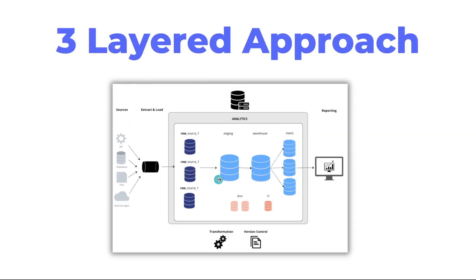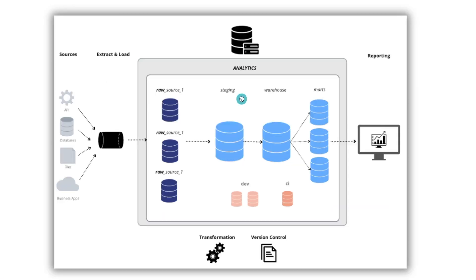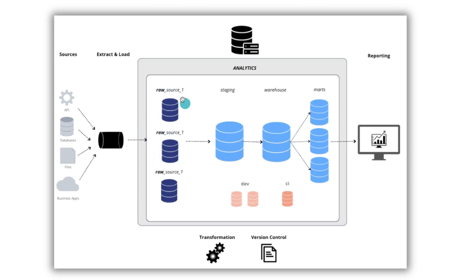So what exactly is a staging layer? Here's a visual of something I call the three-layered approach — staging, warehouse, and marts. In this video, we're focused on staging. Zooming in closer, we can see up front we have what I call the raw source tables. This represents wherever you're loading your raw source data into — let's say a database, maybe file storage. I like to load it all into a cloud database server. I like to keep them separated by the source system. This is the raw data that's unformatted, untouched — it's just dropped in here from the extraction tool.